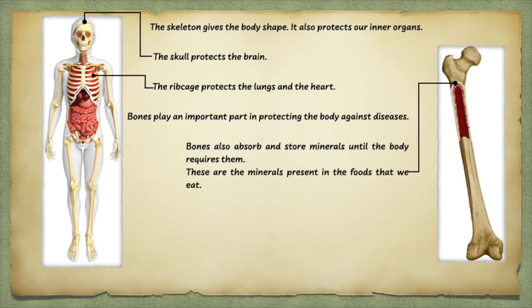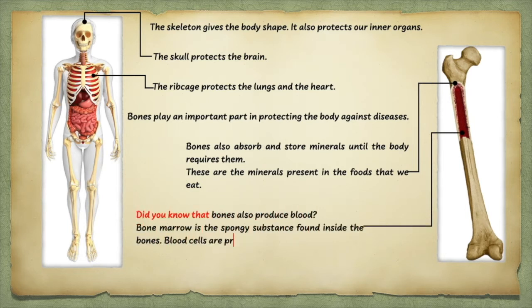Bones also absorb and store minerals until the body requires them. These are the minerals present in the foods that we eat. Did you know that bones also produce blood? Bone marrow is the spongy substance found inside the bones. Blood cells are produced in the bone marrow. So now you know.